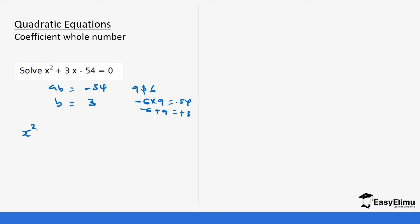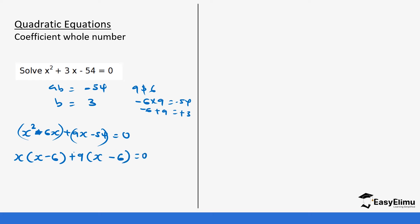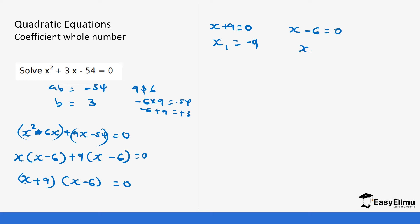So this equation is going to look like x squared minus 6x plus 9x minus 54 equals zero. We group these two as we did before. The common value there is x, giving x minus 6, and then the common value here is 9, giving x minus 6 equals zero. So when you factorize it becomes x plus 9 and x minus 6 equals zero. This means x plus 9 equals zero, so x₁ equals negative 9. And x minus 6 equals zero, so x₂ equals 6.